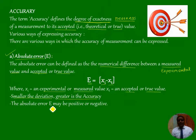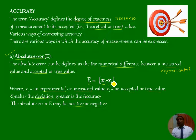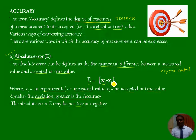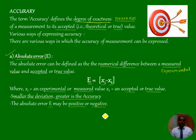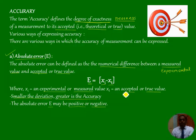The absolute error E may be positive or negative. For example, if your experimental value is smaller than the true value, then the error will be a negative value. If your experimental value is higher or greater than the true value, then your error will be positive. And if they are the same, then the error will be zero — meaning there is no difference between experimental value and true value.